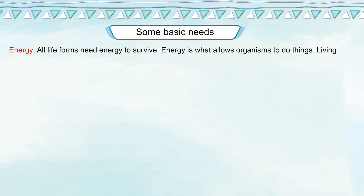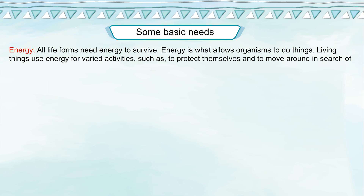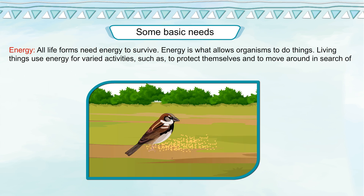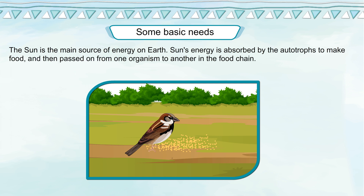Energy: All life forms need energy to survive. Energy is what allows organisms to do things. Living things use energy for varied activities such as to protect themselves and to move around in search of food, water, shelter and other needs. The sun is the main source of energy on earth. The sun's energy is absorbed by autotrophs to make food and then passed on from one organism to another in the food chain.